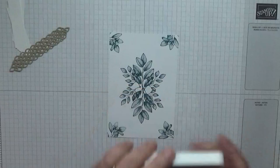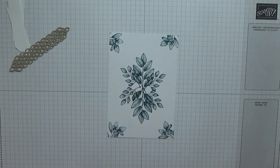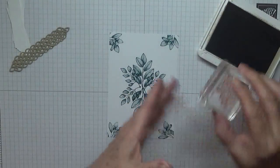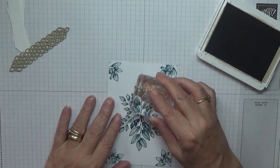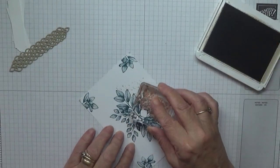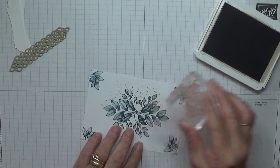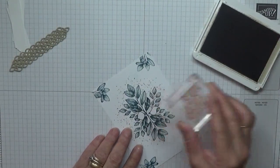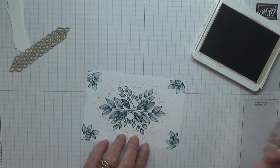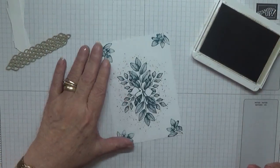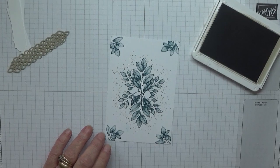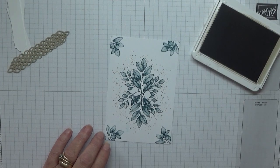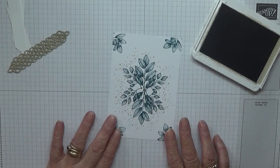Bring in the crumb cake and we're just going to put some speckled dots just round the leaves. Like that. That's the front done.